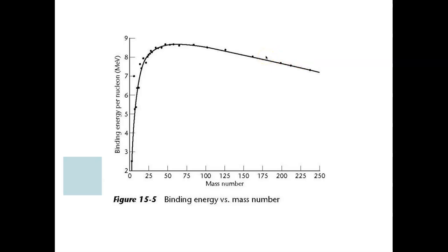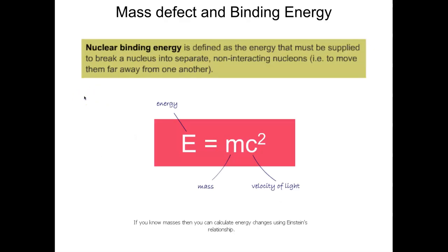Uranium has lower binding energy, making it ripe to be split — to be fissioned. Over at the low end of the curve, hydrogen-1 has essentially no binding energy because there's only one nucleon. Deuterium has a little more. As you add more protons to small nuclei the strong force dominates over the still-small nucleus, increasing stability, until binding energy peaks at around iron-56.